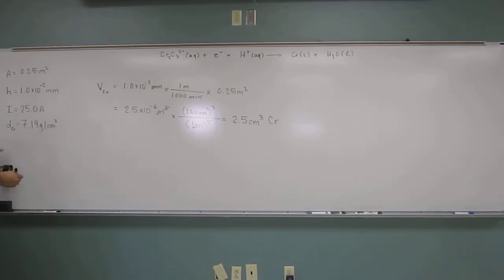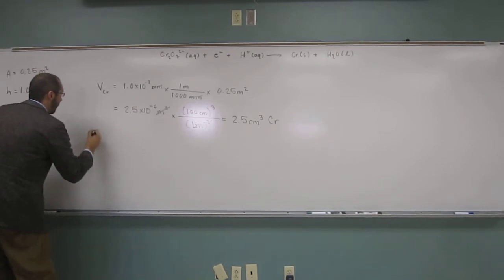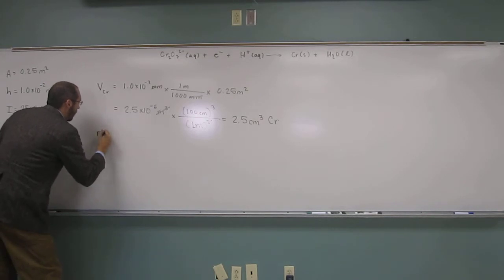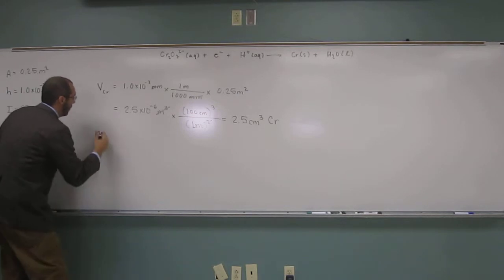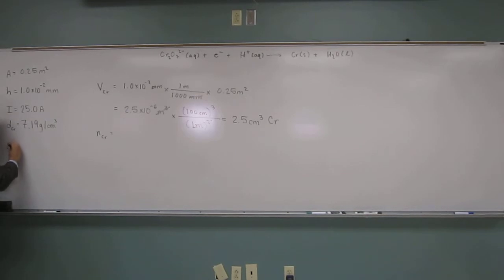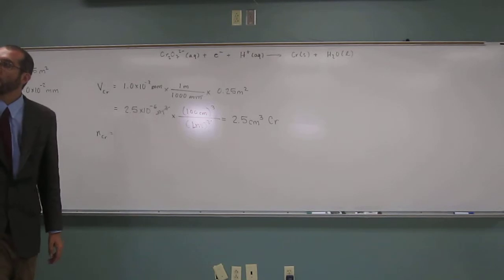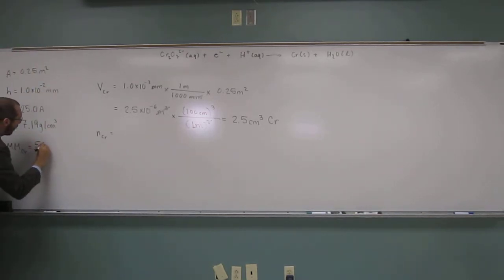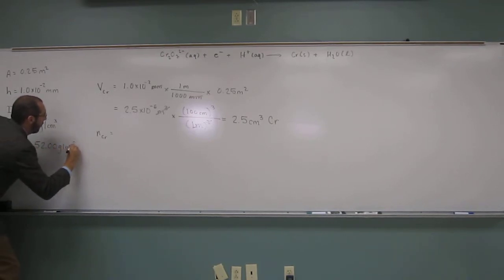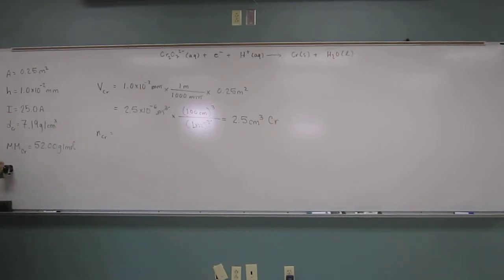So that's how much chromium we need to electroplate the whole bumper. So, what's the density of chromium we've got? So what would be the mass of that chromium? In fact, let's go so far as to say what would be the number of moles of that chromium. So for number of moles of chromium, we can get the mass directly, but we're going to need the molar mass of chromium. Get that from the periodic table. So what is that over there? 52.00 grams per mole of chromium. So let's go all the way to moles of chromium.